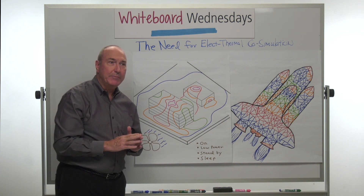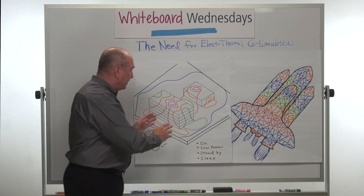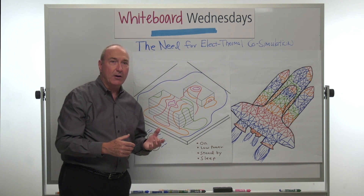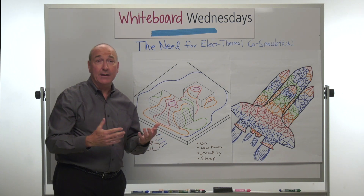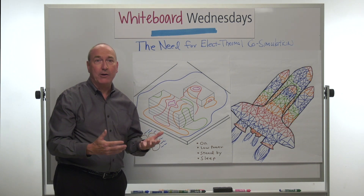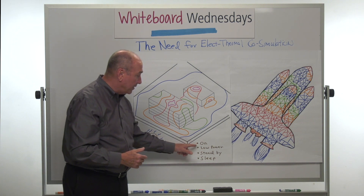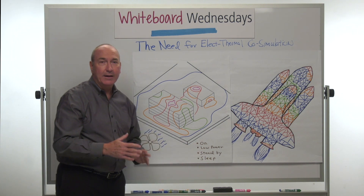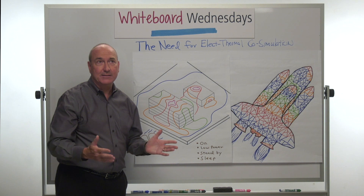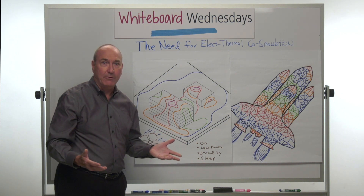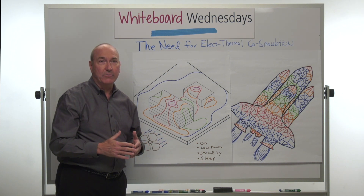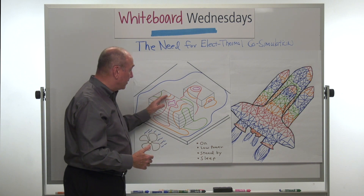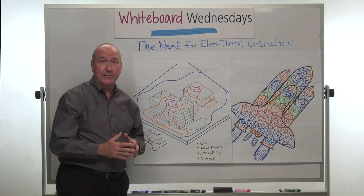Another part of the problem is that chips, like in a cell phone, are just not always on or off. They have different power modes — it might be full on, it might be low power, standby, or sleep — and all of these dissipate different amounts of power, and therefore generate different amounts of heat, so the temperature profile is different.